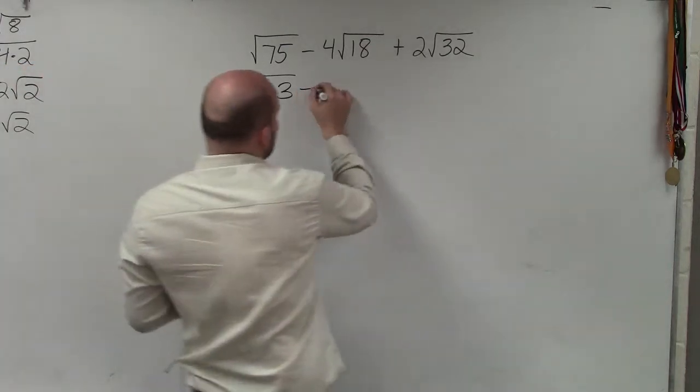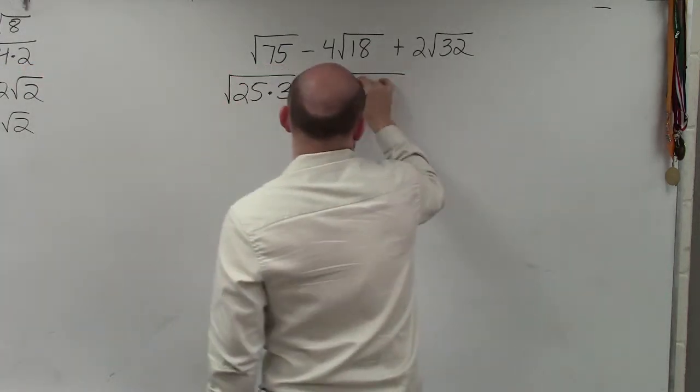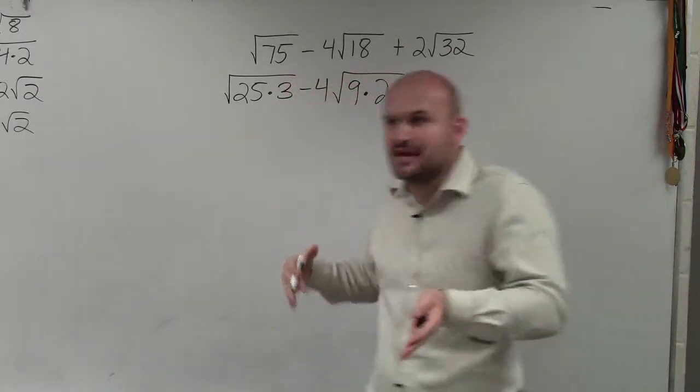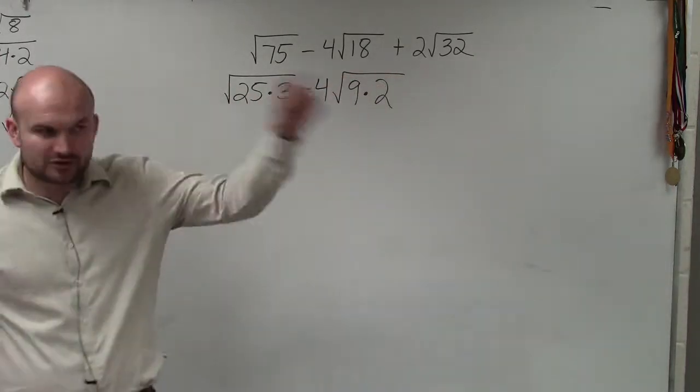And 18, I can rewrite. When I do the factors, I would do 9 times 2. Well, instead of factoring down 9 as the 3 times 3, I would group the 3 and 3.